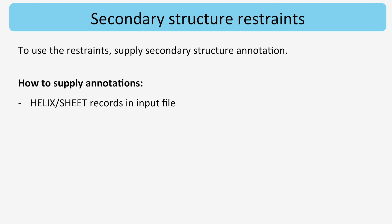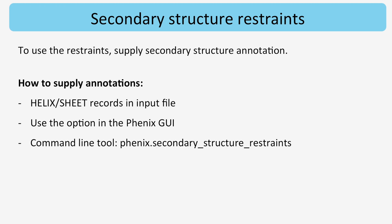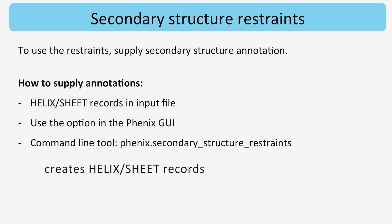The records can be obtained by using external programs, and they are typically present in files downloaded from the PDB. Secondly, the Phenix Refine and RealSpace Refine GUIs can perform the annotations. Finally, the standalone command line tool phenix.secondary_structure_restraints can supply input files for Phenix and can also create helix and sheet records.